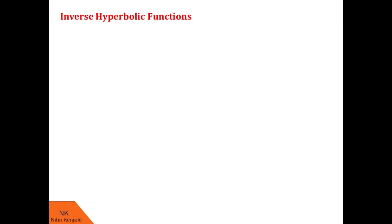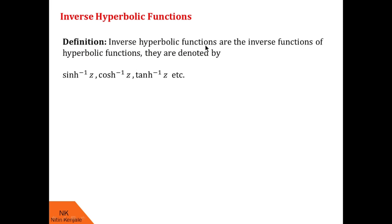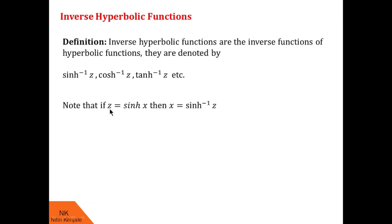There is no formal definition for inverse hyperbolic functions, but we say that inverse hyperbolic functions are the inverse functions of hyperbolic functions. They are denoted by sinh⁻¹(z), cosh⁻¹(z), tanh⁻¹(z), etc. To understand this, note that if z = sinh(x), then we say that x = sinh⁻¹(z). This definition is exactly similar to the way we defined inverse trigonometric functions.